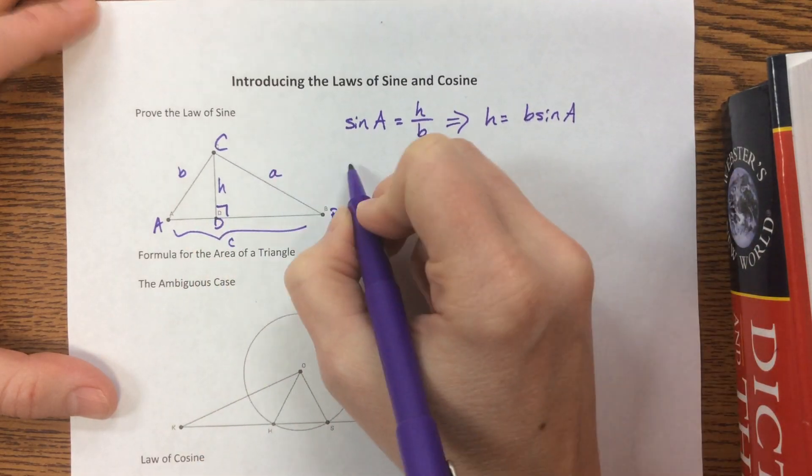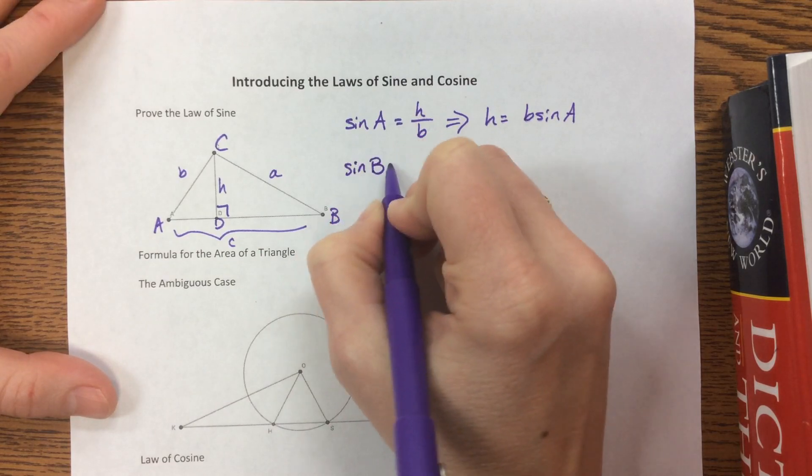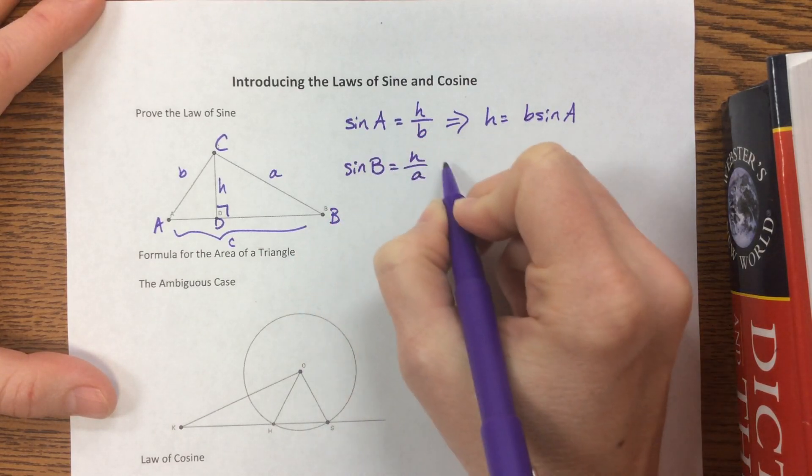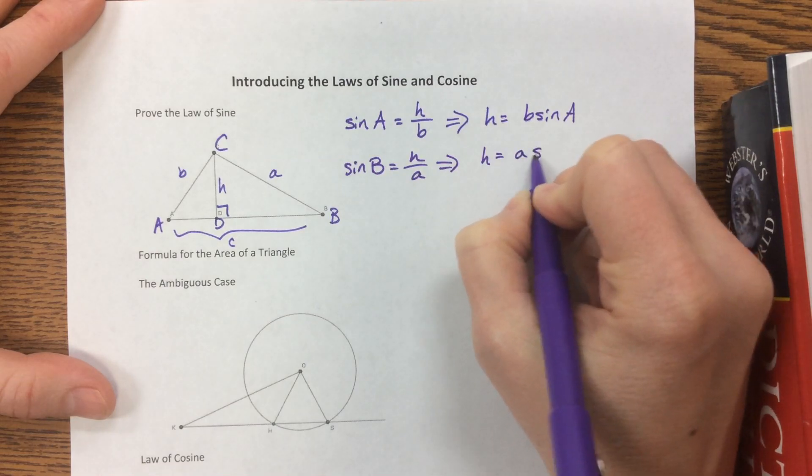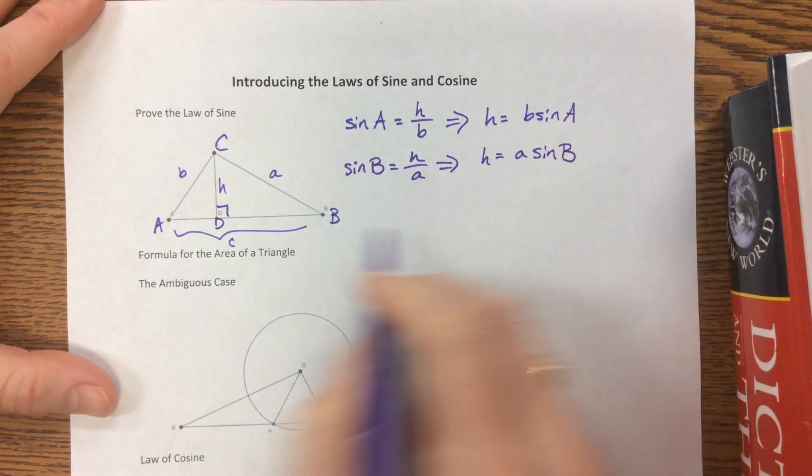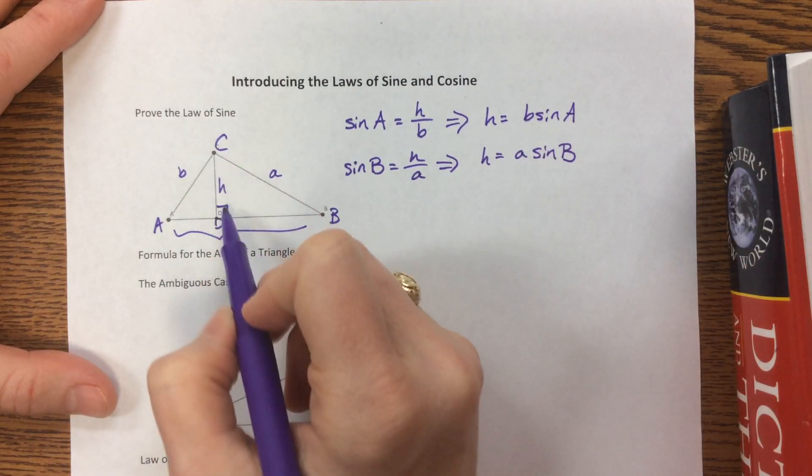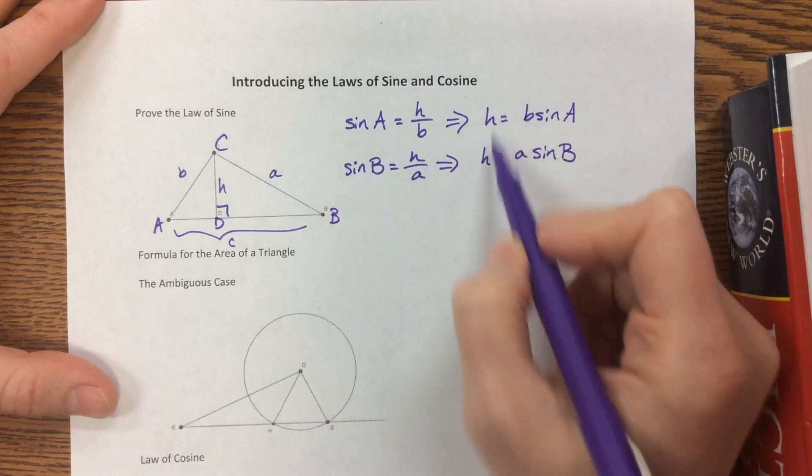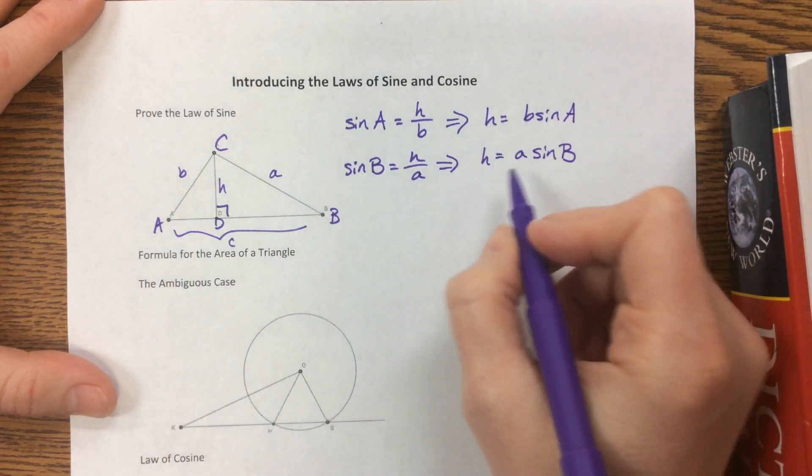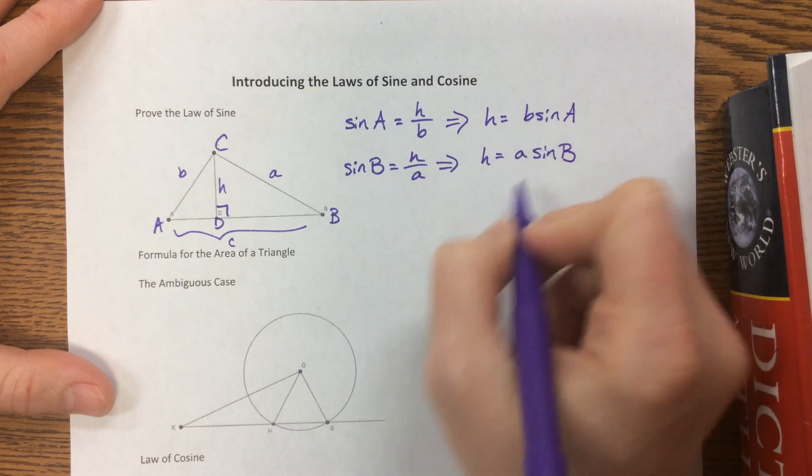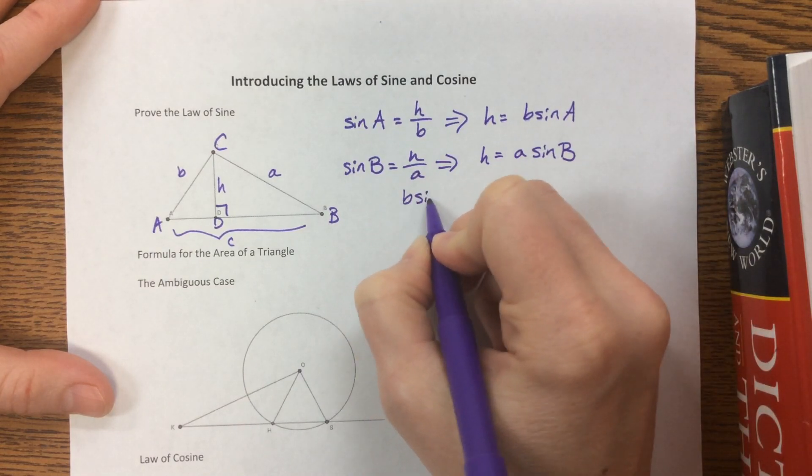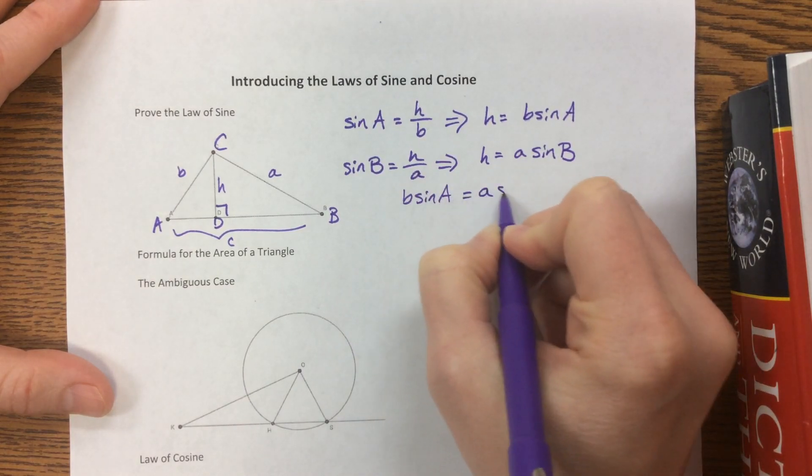In this little triangle we can say that sine of B is equal to h over A, thus implying that h is equal to A sine B. Well, hopefully you notice this is the same h in both of them. So this h in both of these is equivalent, and so we can set these two things equal to each other. We can say B sine of A is equal to A sine of B.